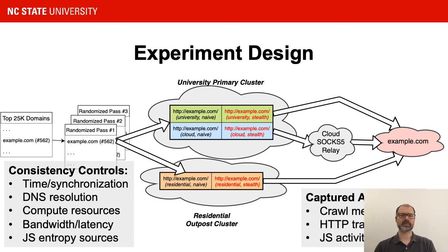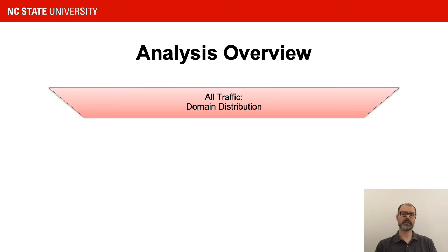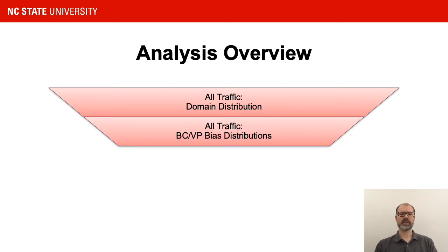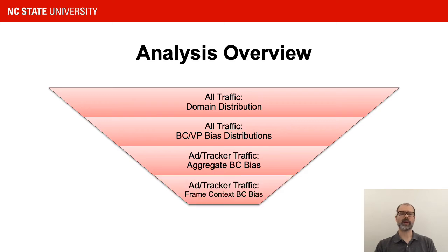We capture the typical artifacts, specifically HTTP metadata for requests and some JavaScript activity. There is not time to address every finding in this presentation, but I will go through a full drill-down of our most fundamental HTTP traffic analysis results, starting with all third-party HTTP requests and their distribution across all domains, then looking at how that varies across vantage point and browser configuration using a bias score heuristic we develop in the paper to find outliers. We then take a subset of the traffic most interesting to security and privacy researchers relating to advertising and user tracking, look at the biases — particularly browser configuration biases — and do a further analysis by looking at where in the page context, the HTML frame context, the requests are originating from.